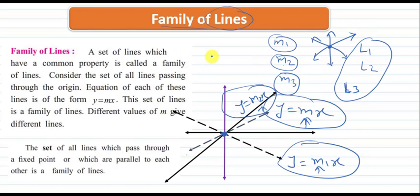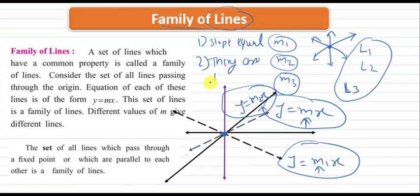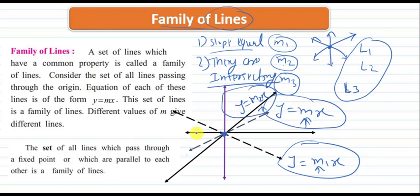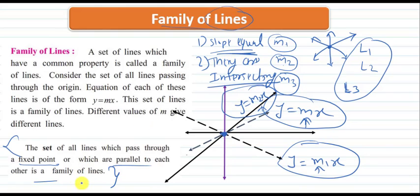So here we have seen two properties. One: their slope should be equal — that is, the lines are parallel. And two: they are intersecting at a common point. So if a set of lines are intersecting at a common point or their slope is equal — that is, they are parallel — then those set of lines is called a family of lines. The formal definition: the set of all lines which pass through a fixed point, or which are parallel to each other, is a family of lines.